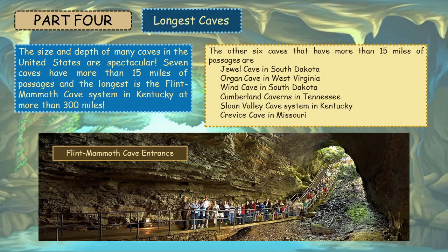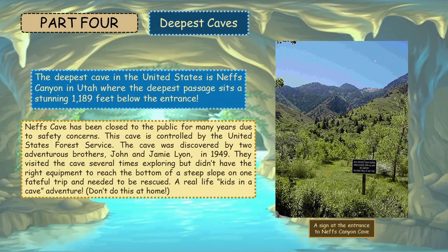The size and depth of many caves in the United States are spectacular. Seven caves have more than 15 miles of passages and the longest is the Flint Mammoth Cave System in Kentucky at more than 300 miles. The other six caves that have more than 50 miles of passages are Jewel Cave in South Dakota, Oregon Cave in West Virginia, Wind Cave in South Dakota, Cumberland Caverns in Tennessee, Sloan Valley Cave System in Kentucky, and Crevice Cave in Missouri. The deepest cave in the United States is Neff's Canyon in Utah, where the deepest passage sits a stunning 1,189 feet below the entrance.